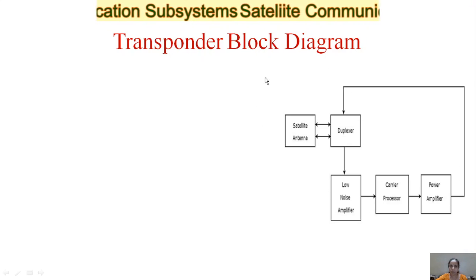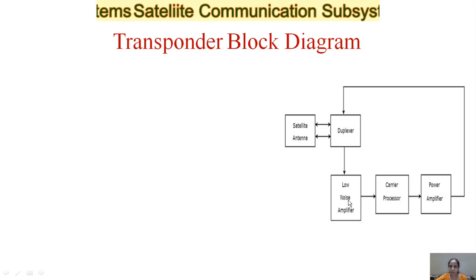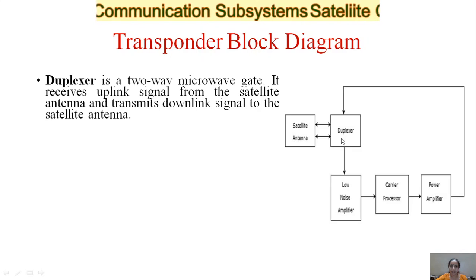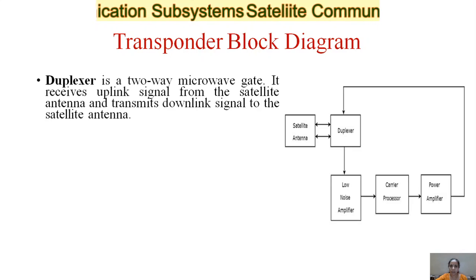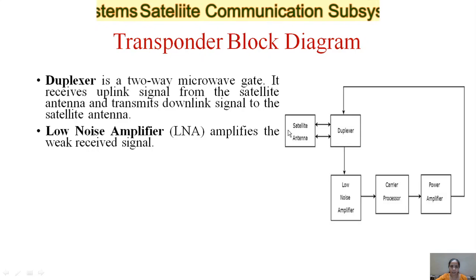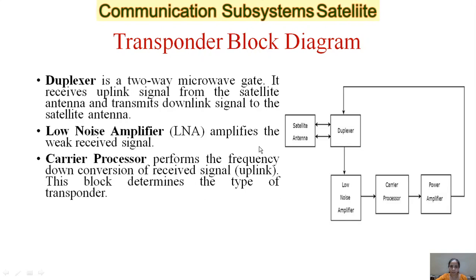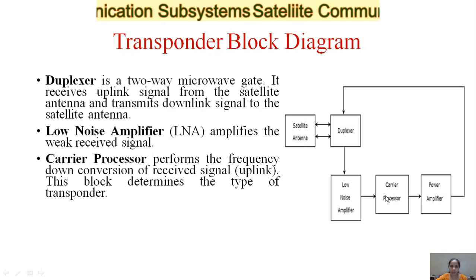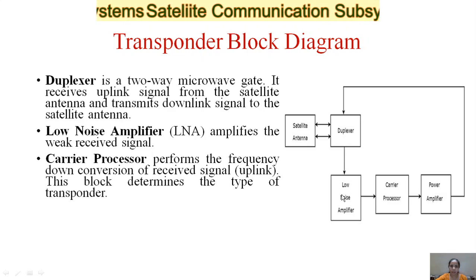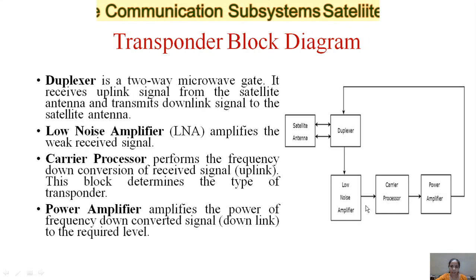The general block diagram of a transponder includes a satellite antenna, duplexer, low noise amplifier (LNA), carrier processor, and power amplifier. The duplexer is a two-way microwave gate that receives the uplink signal from the satellite antenna and transmits the downlink signal to the satellite antenna. The low noise amplifier amplifies the weak received signal. The carrier processor performs frequency down-conversion of the received uplink signal and determines the type of transponder.